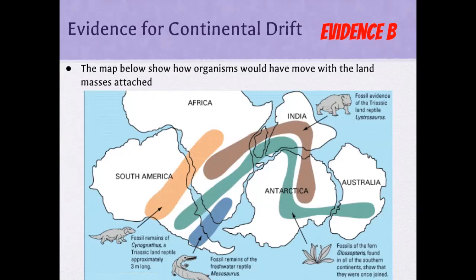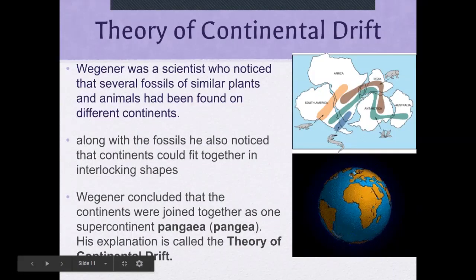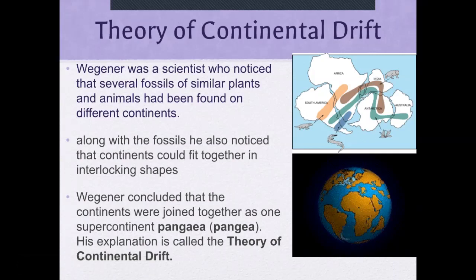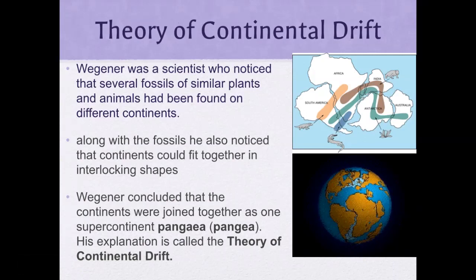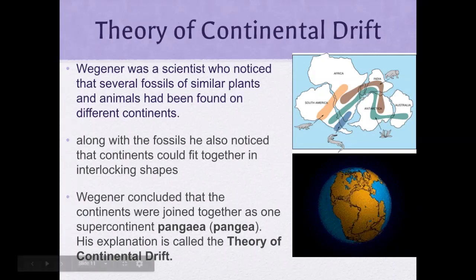When you put the continents together like puzzle pieces, the fossil records actually line up as well. India, Antarctica, Africa, Australia, and South America all connected — and it follows the fossil record. Wegener was a scientist who noticed that similar fossils of plants and animals have been found on different continents, and that the continents could fit together in interlocking shapes. He concluded that the continents were once joined as one supercontinent called Pangaea, and his explanation is called the theory of continental drift.